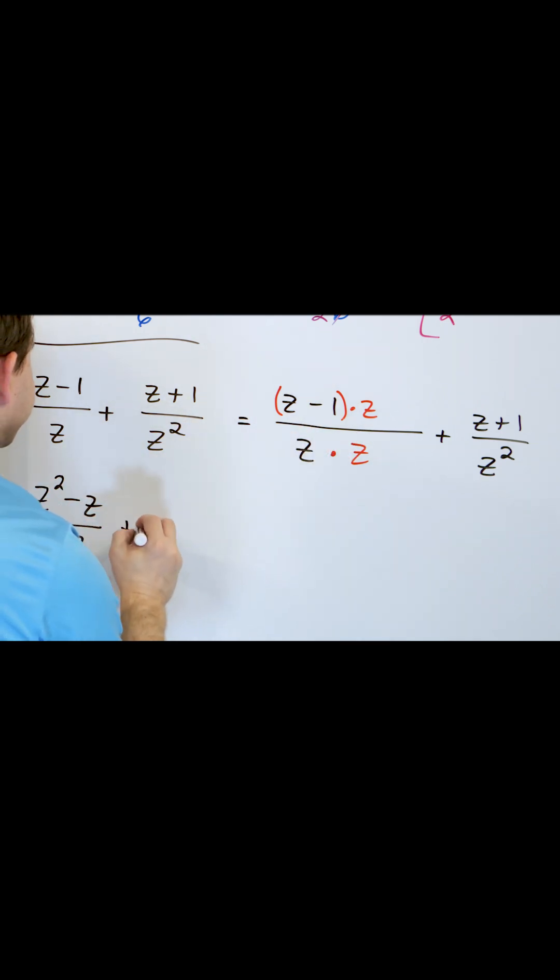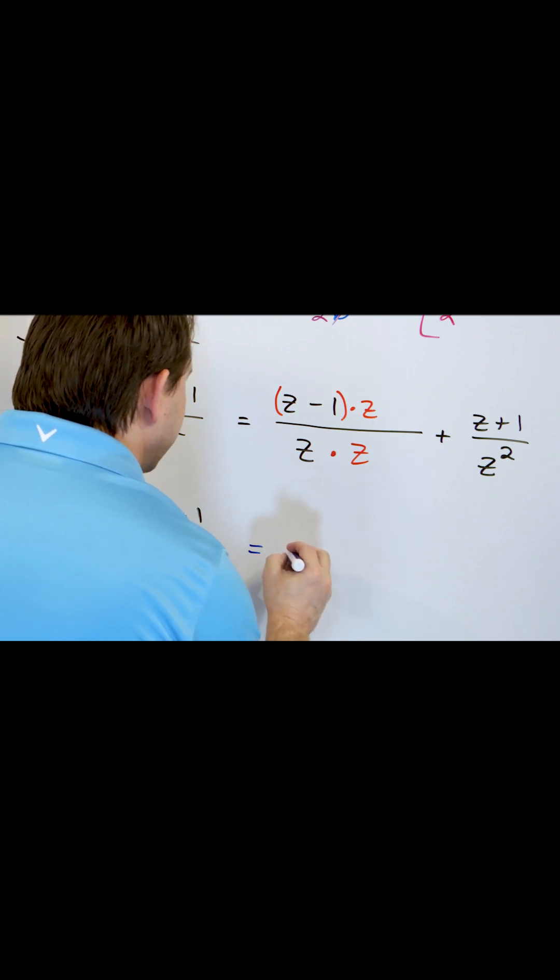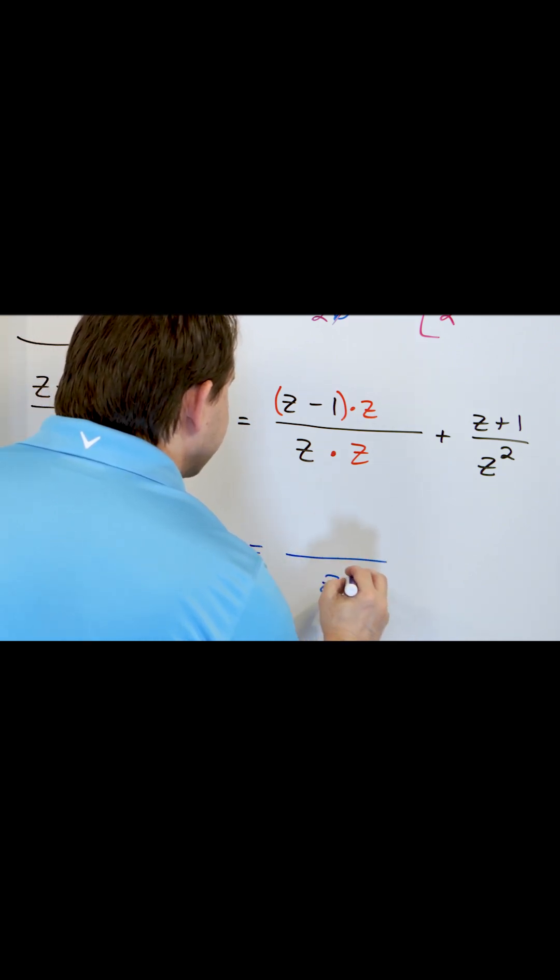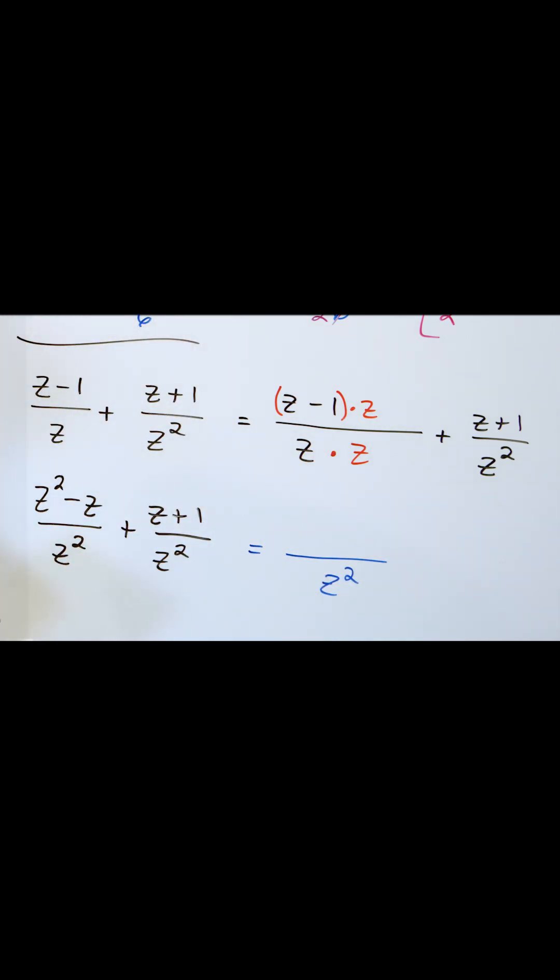And then I have plus z plus one over z squared. The answer will be the same common denominator. I don't add those, just like with regular denominators, the common denominator sticks around in the final answer and then I just add them together because I have a plus sign.